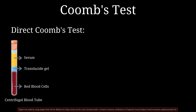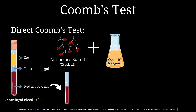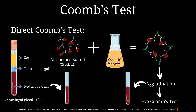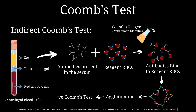For the direct Coombs test, a blood sample is centrifuged to separate the red blood cells from the rest of the components of blood. Coombs reagent is then added to red blood cells that are bound to IgG antibodies. The Coombs reagent binds onto the Fc portion of IgG antibodies and completes the reaction, causing agglutination to occur. If agglutination takes place, it is known as a positive Coombs test.